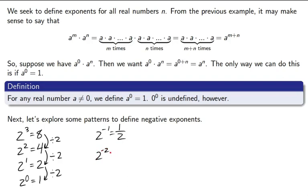So, maybe 2 to the negative 2. We're going to divide 1 half by 2. That's going to be 1 fourth. Which, by the way, is 1 over 2 squared. If you divide by 2 again, 1 fourth divided by 2 is 1 eighth. Which, by the way, is 1 over 2 cubed. And so, these should give you an idea of why we define a negative exponent.